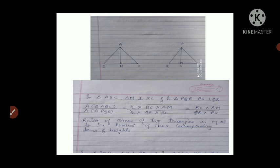Now if we want to find the ratio of areas of both triangles, we know the formula: area of a triangle is half into base into height. So area of triangle ABC upon area of triangle PQR equals (half × BC × AM) / (half × QR × PS). The halves cancel, leaving BC × AM / QR × PS. So the ratio of areas of two triangles equals the product of their corresponding bases and heights.